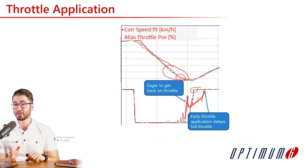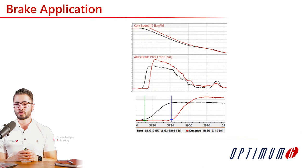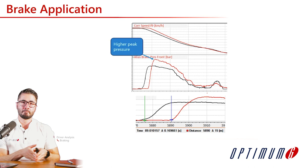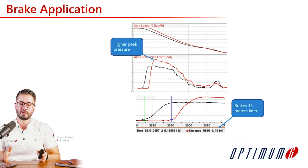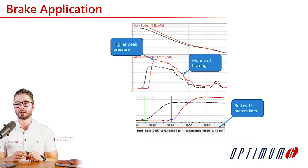Looking at brake application: one driver is applying more pressure — the peak pressure is higher, and deceleration is also much higher. In Formula Student, drivers often do not exploit the brakes at maximum capacity. One driver was able to apply higher peak pressure and brake 15 meters later. We can also see the comparison driver is trail braking a lot more, which influences the balance of the car.